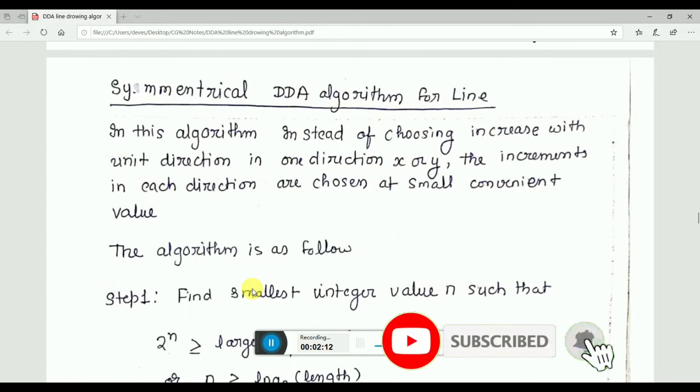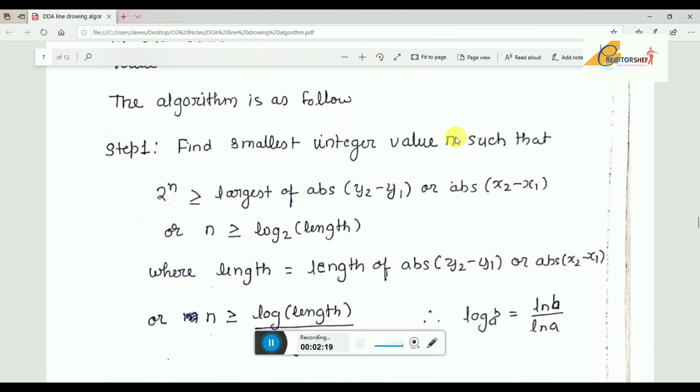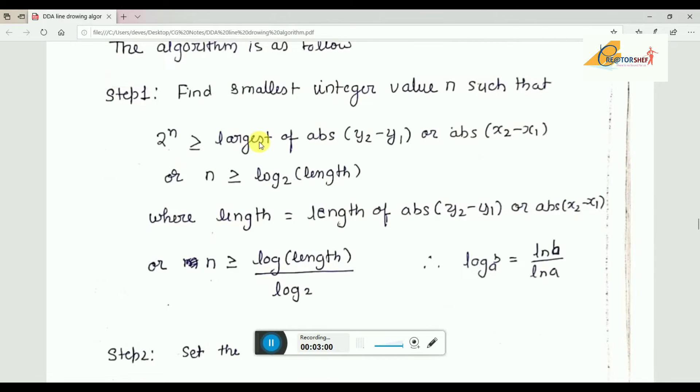So the algorithm is quite simple. The first step is to find the smallest integer n such that 2^n is greater than the length. The formula is n ≥ log₂(length), where n is log base 2, and the length here is the absolute value of (y2 - y1) or (x2 - x1).